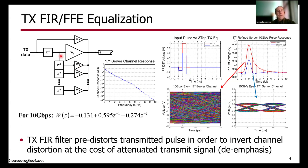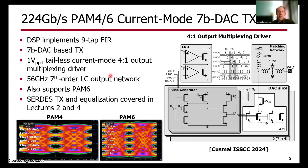If the number of FIR filter taps needed are relatively small, we can implement this with analog summation at the output. However, as the tap count grows, architectures that perform the FIR computation in a DSP followed by a DAC-based output stage offer a better solution. Shown here is an example: a 224 gigabit per second transmitter that uses a DSP to calculate a nine-tap FIR filter followed by a seven-bit DAC-based transmitter output stage.